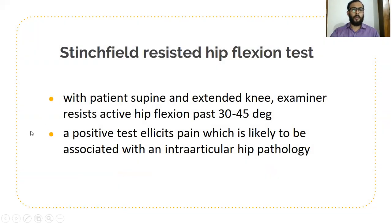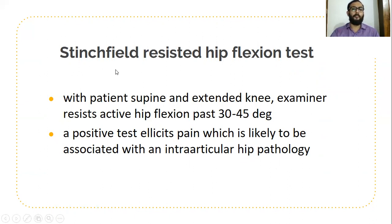Coming to the Stinchfield resisted hip flexion test. Resisted hip flexion is done as resistance to SLR — straight leg raising. The patient is in supine position, and in 30 to 45 degrees, the patient's leg is raised actively with complete knee extension — that is flexion of the hip in complete extension of the knee. The patient is asked to elevate the affected limb against resistance. A positive test elicits pain, which is suggestive of intra-articular hip pathology.